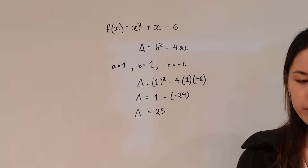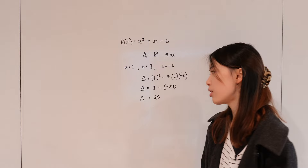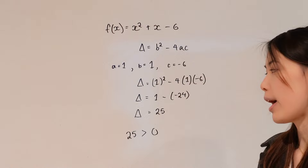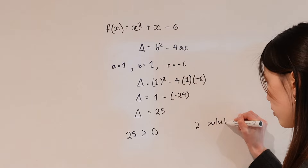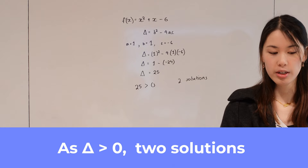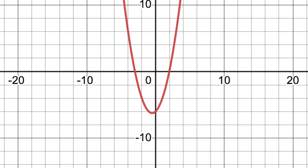Since 25 is positive — 25 is greater than zero — this means that our graph will have two solutions, and that means it will touch the x-axis twice. Hence, our answer is that since the discriminant is greater than zero, there are two distinct solutions to x² + x − 6. As you can see when we plot this graph, the parabola clearly touches the x-axis at two distinct points.